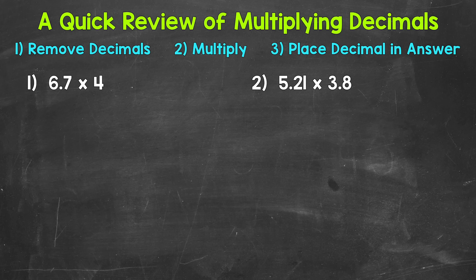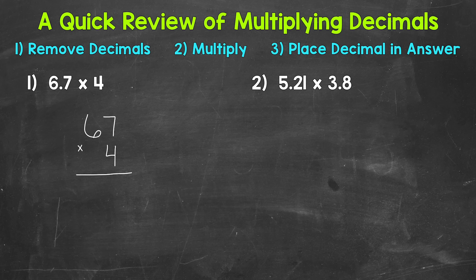Let's jump into number 1 where we have 6 and 7 tenths times 4. The first thing we're going to do when we have a multiplication problem that involves decimals is remove any decimals within the problem. We're going to multiply just like we would with whole numbers. So we'll rewrite number 1 as 67 times 4 — remove any decimals, and we'll worry about placing the decimal in our answer once we multiply.